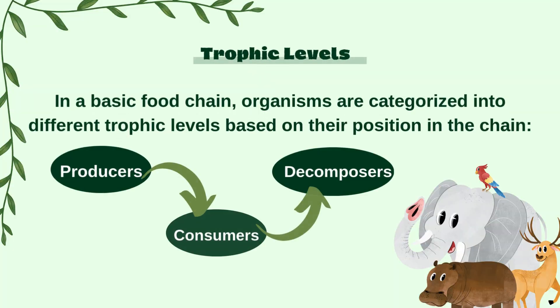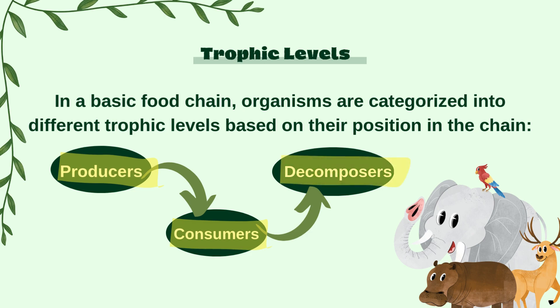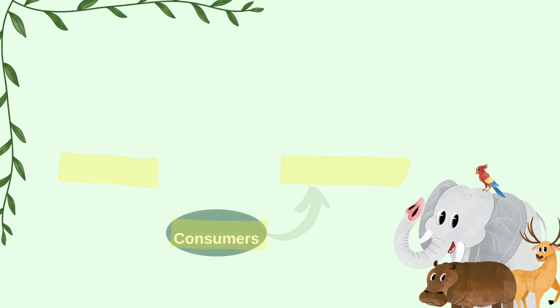In a basic food chain, organisms are categorized into different trophic levels based on their position in the chain. The first level is producers. Producers are eaten by consumers. The last level is decomposers. I am going to explain all these levels.